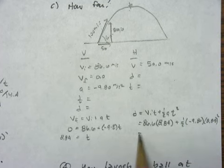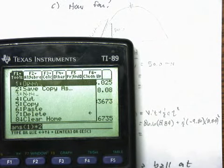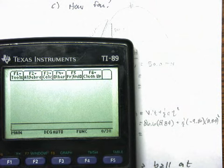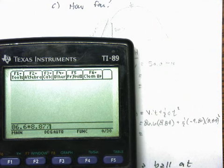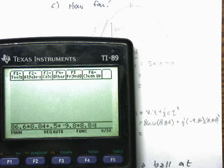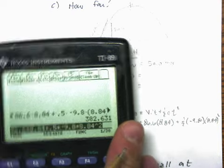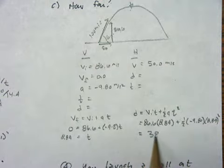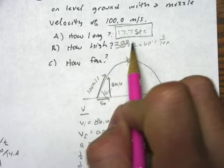So then I crank this through on my calculator. So, 86.6 times 8.84 plus 1.5 times negative 9.8 times 8.84 squared. 383. So that's how high it goes. 383 meters.